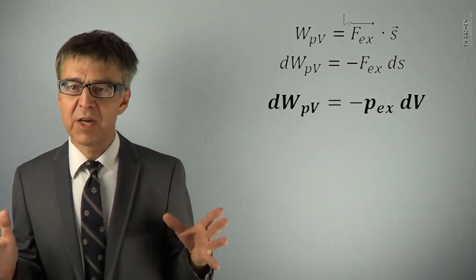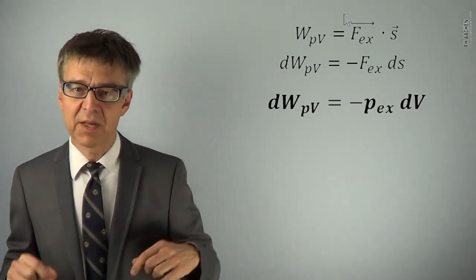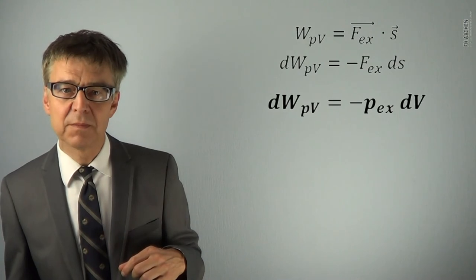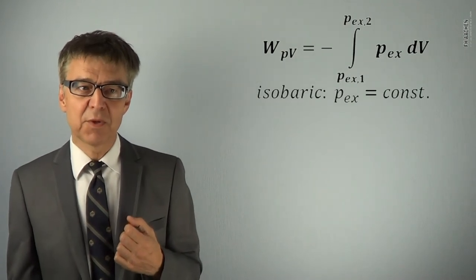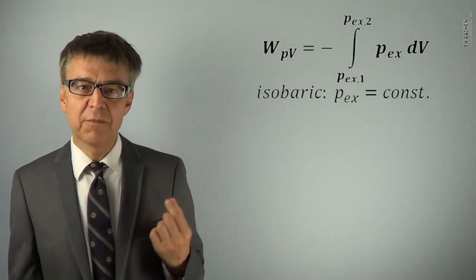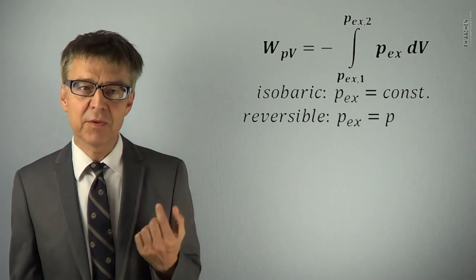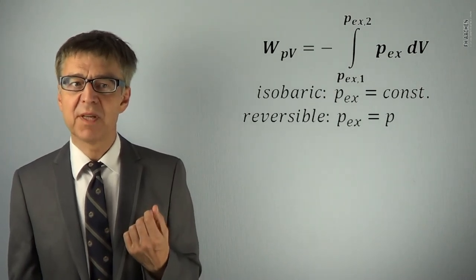The negative sign is mandatory due to the sign convention. A positive value of dV means a negative value of dW. If the external pressure is constant and equal to the internal pressure, PV work is simply W equals minus P delta V.